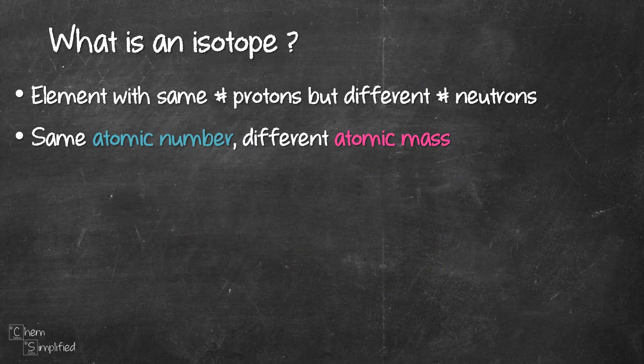In case you need a recap on what's an isotope, it's basically one element having different variants. They all have the same number of protons, but they have different number of neutrons. And because of that, they have the same atomic number but different atomic mass.